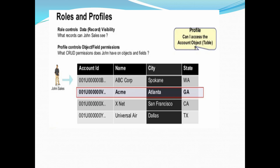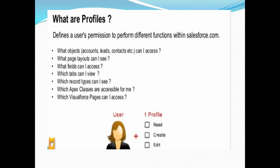A user can contain only one profile. Profiles control what objects you can access, what page layouts you can access, and field level access — for example, when creating a new field, you specify which profiles get access. Profiles also control which tabs, record types, and the mapping of record types to page layouts. Additionally, access to Apex classes and Visualforce pages is also controlled by profiles.